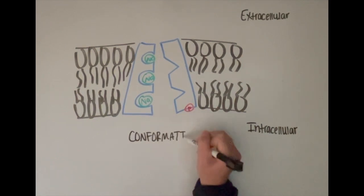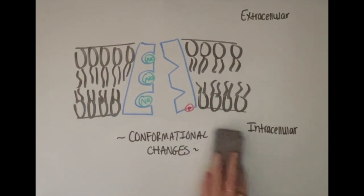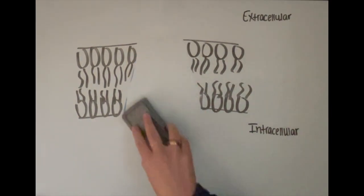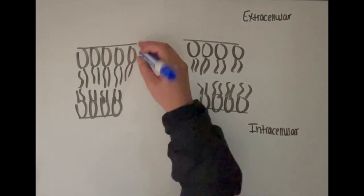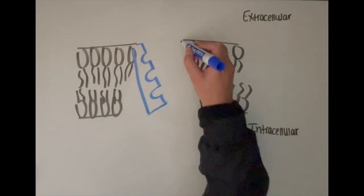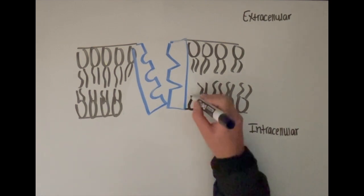Once the three sodium ions are bound and the phosphate, this induces conformational changes to the pump. The conformational changes close the pump on the intracellular side and open it on the extracellular side.